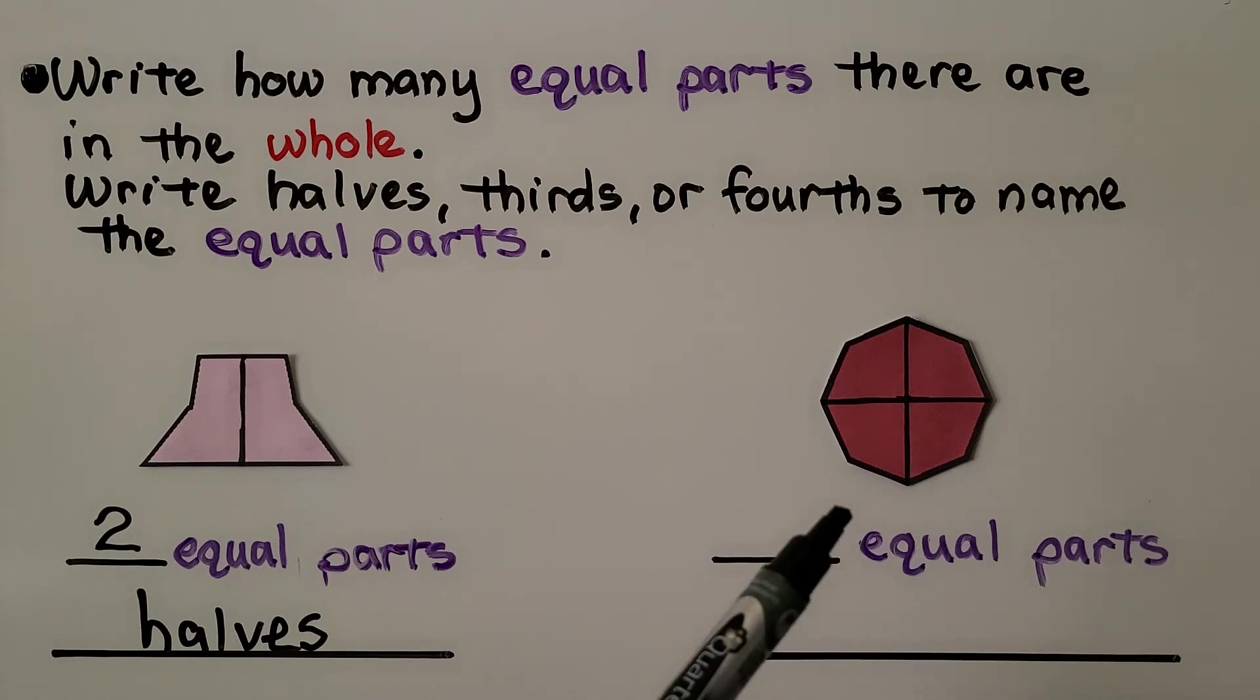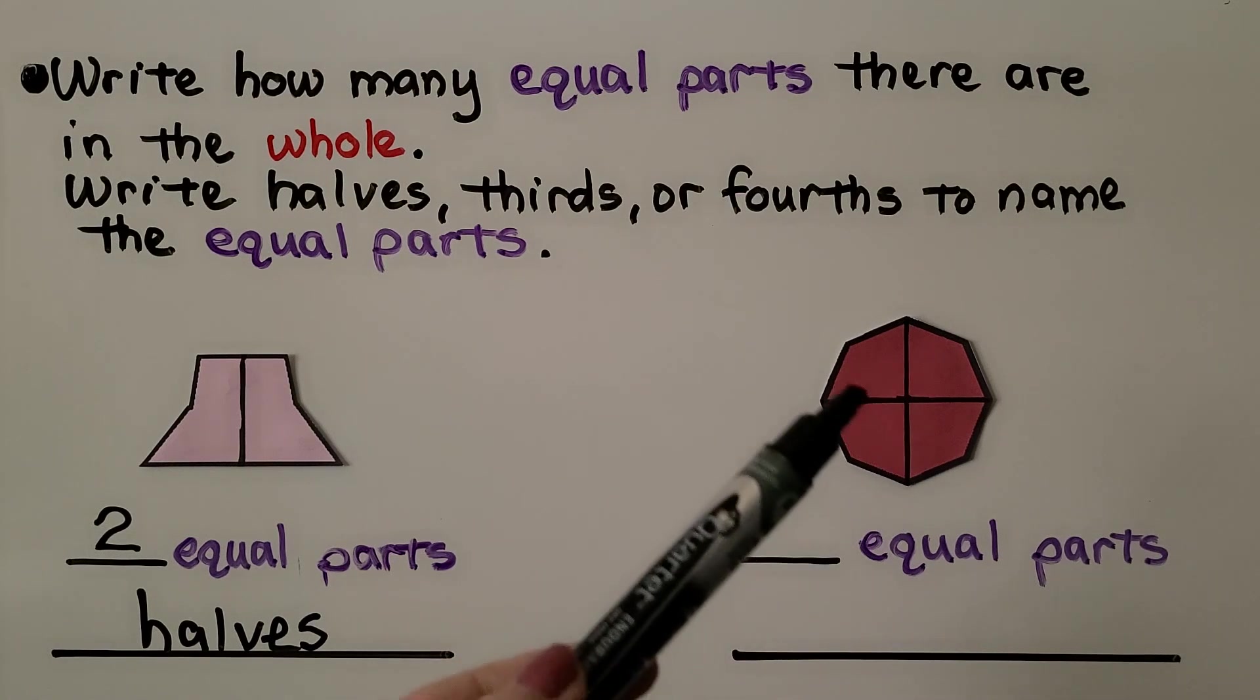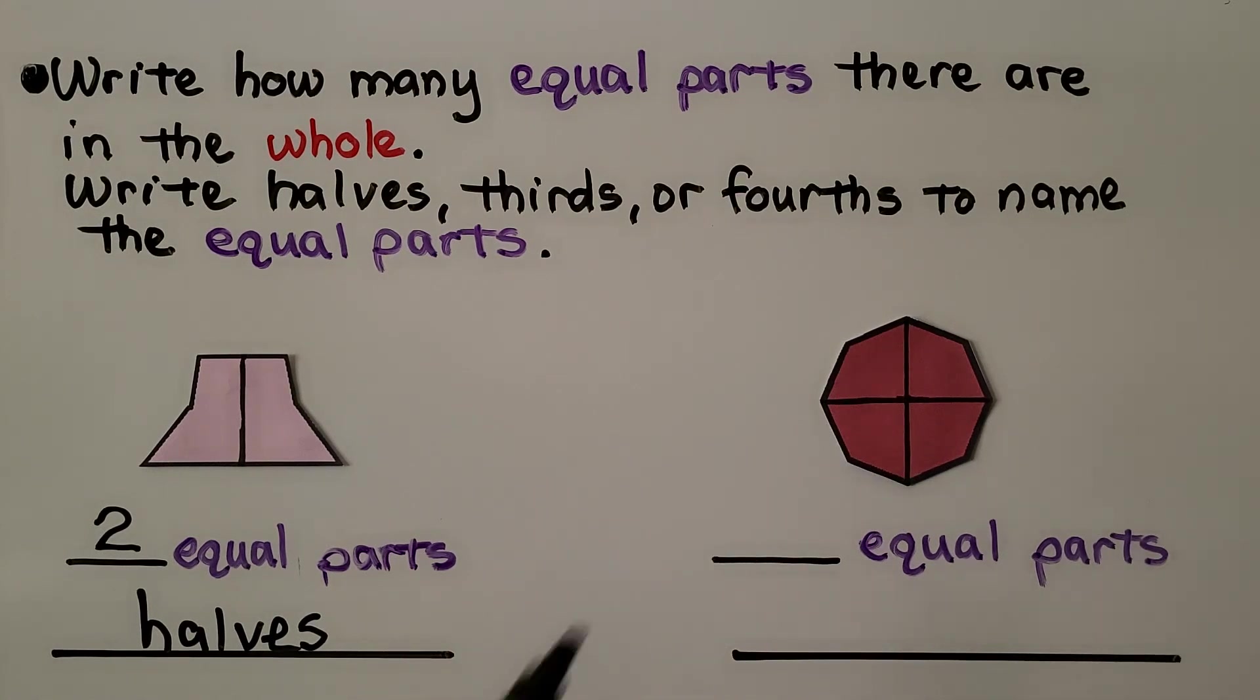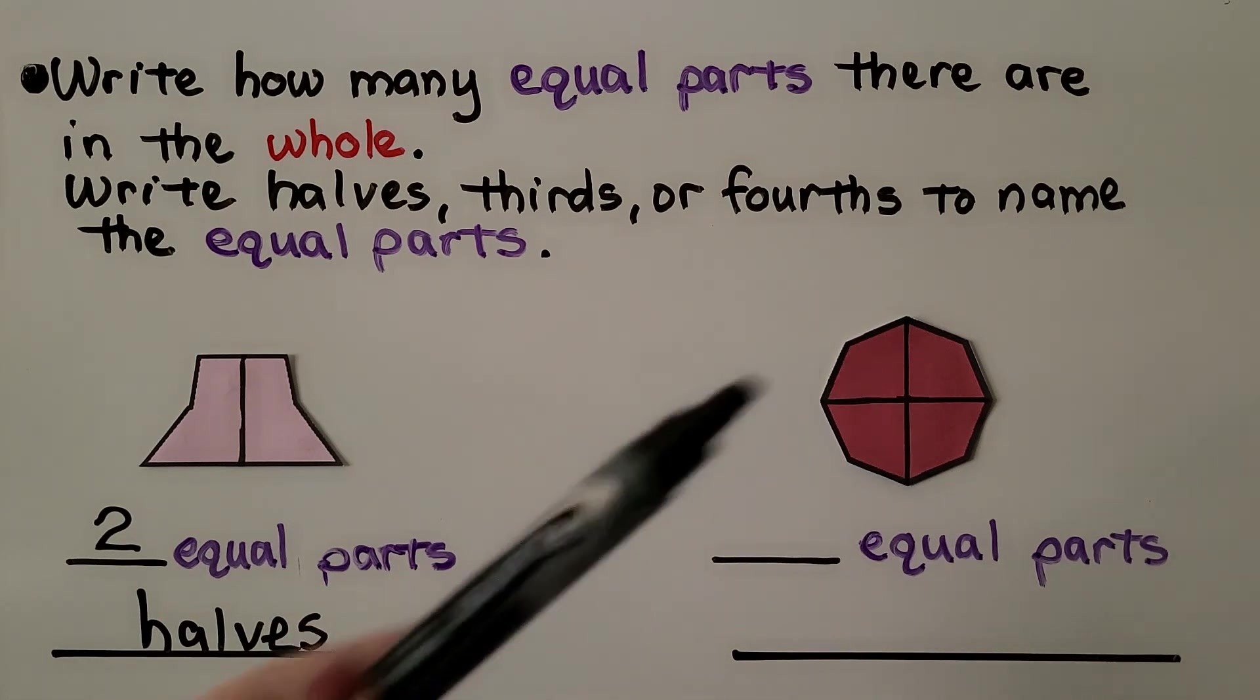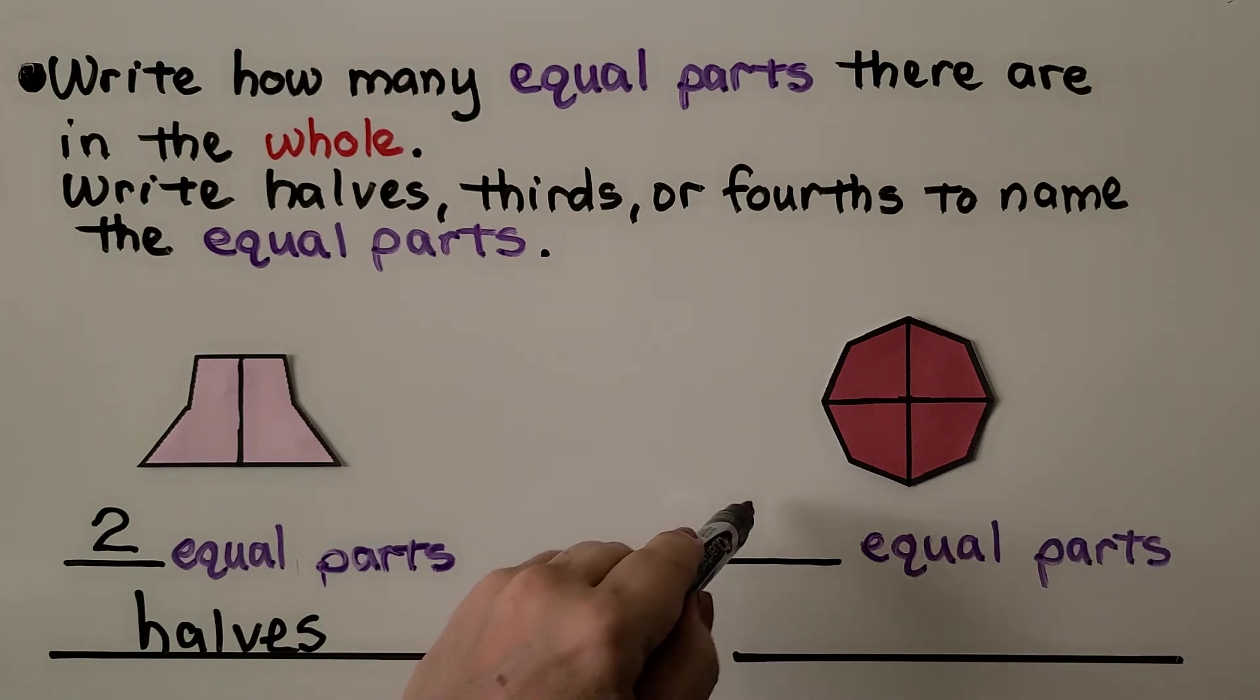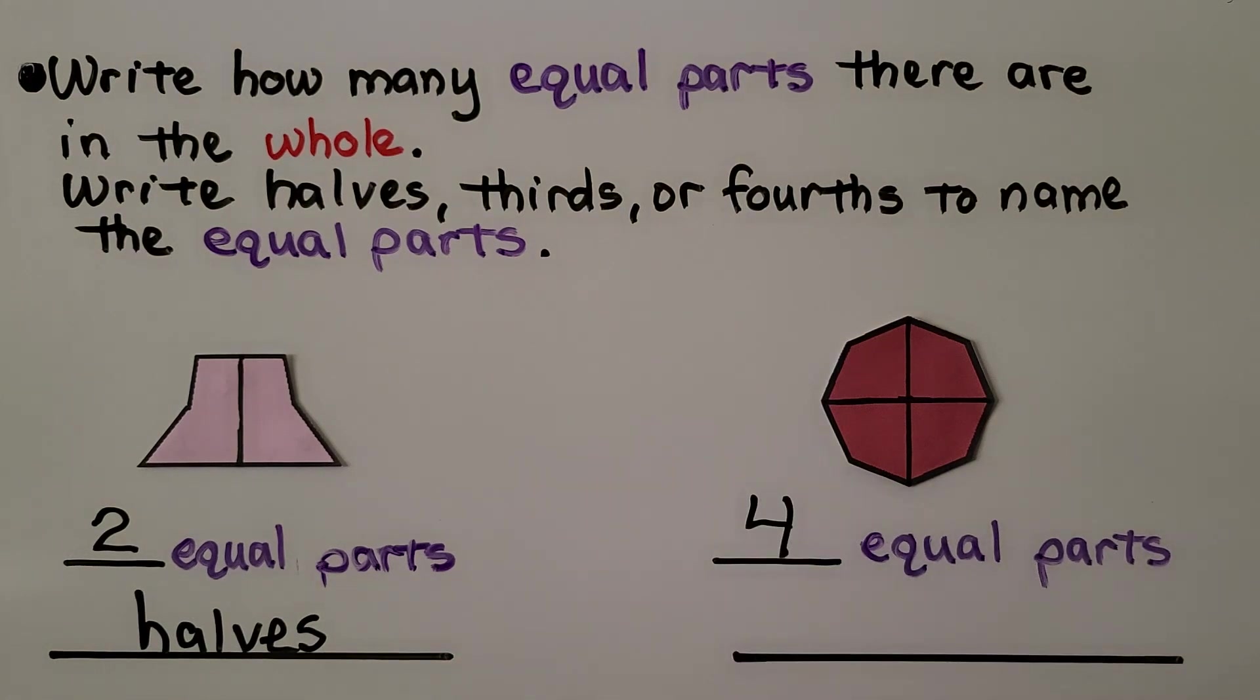Now look at this one. Does each part look the same size? And how many parts are there? We can count them. One, two, three, four. There are four equal parts. And since there are four, they are fourths.